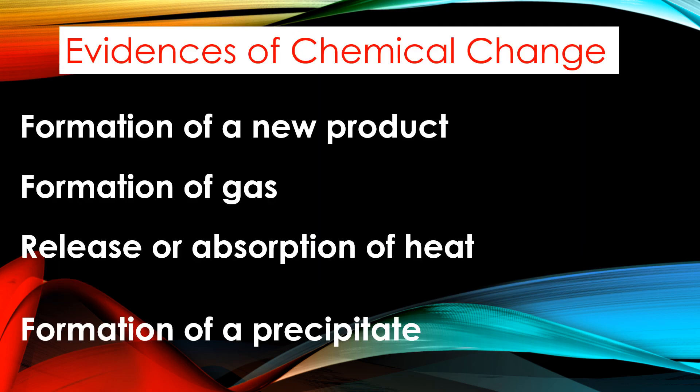How can we say that a chemical change occurred? There are evidences of chemical change: formation of a new product, formation of gas, release or absorption of heat, and formation of a precipitate.